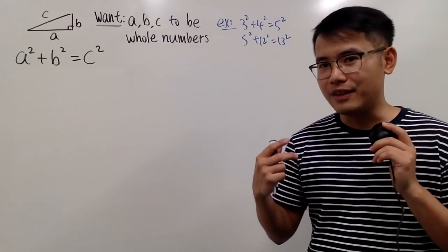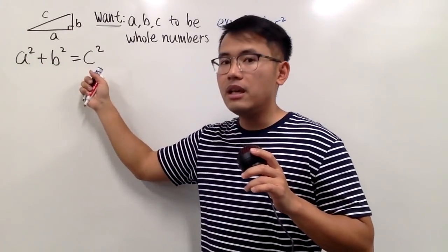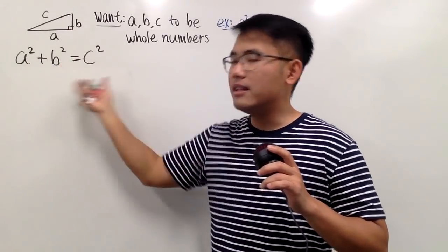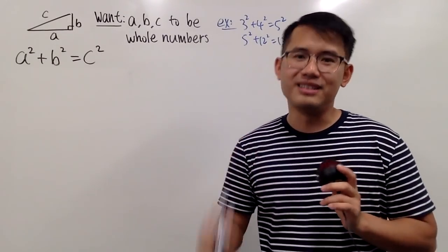Wouldn't it be nice if we can have a generator to help us generate A, B, and C, and they are all whole numbers, and they satisfy this for us? That would be so nice, isn't it? So I will show you guys how to do that in this video.